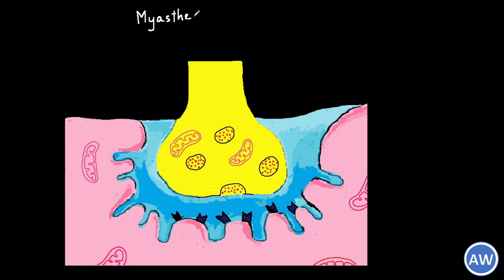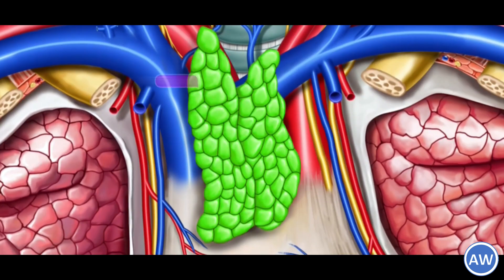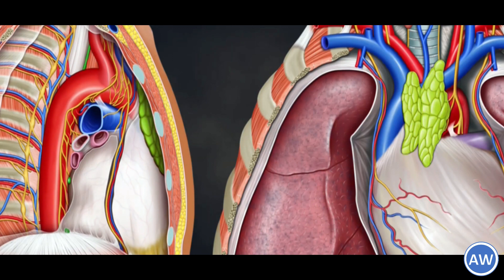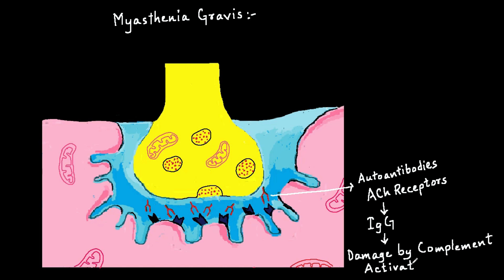Coming back to myasthenia gravis — in myasthenia gravis, the immune system produces autoantibodies against the acetylcholine receptors present in the postsynaptic membranes of the neuromuscular junctions. This is usually the result of hyperplasia of the thymus or the growth of a thymic tumor called thymoma. These autoantibodies are mostly IgG and lead to damage of the neuromuscular junction by complement activation.